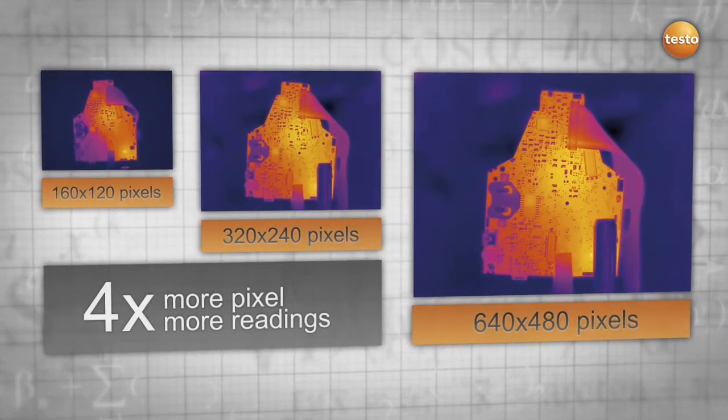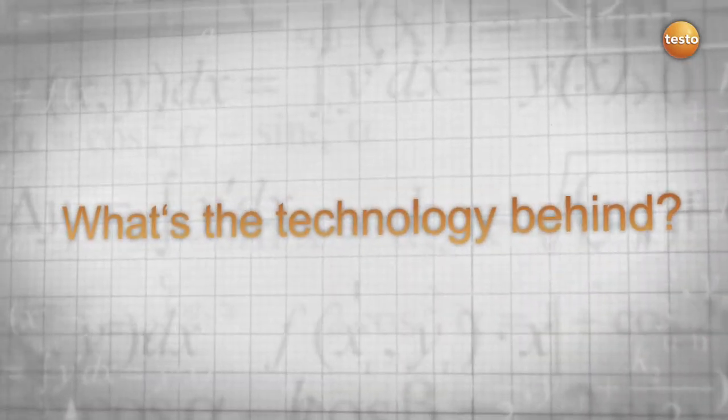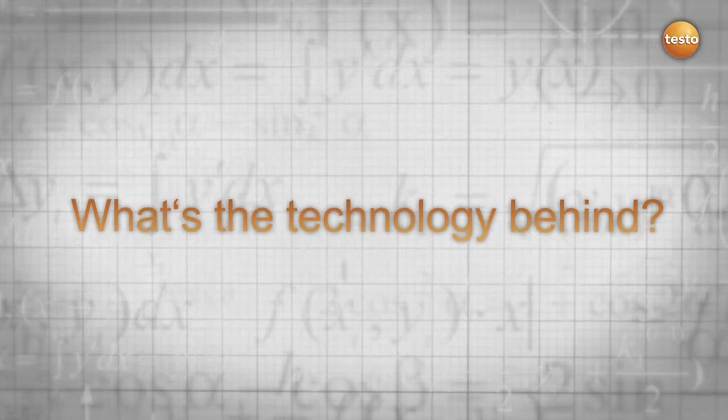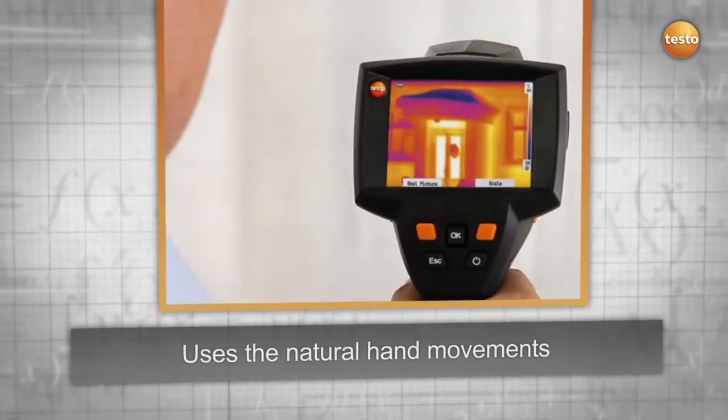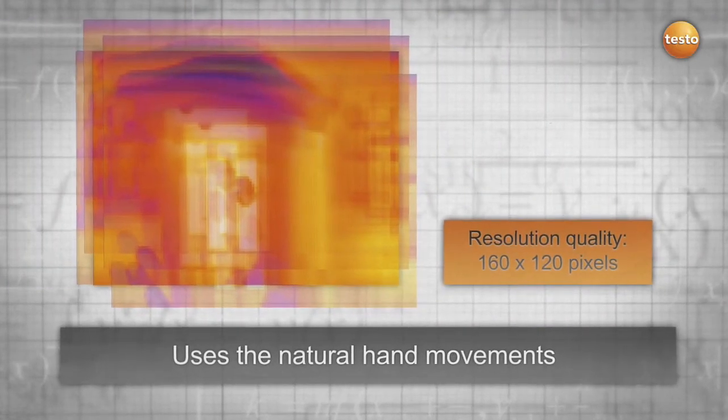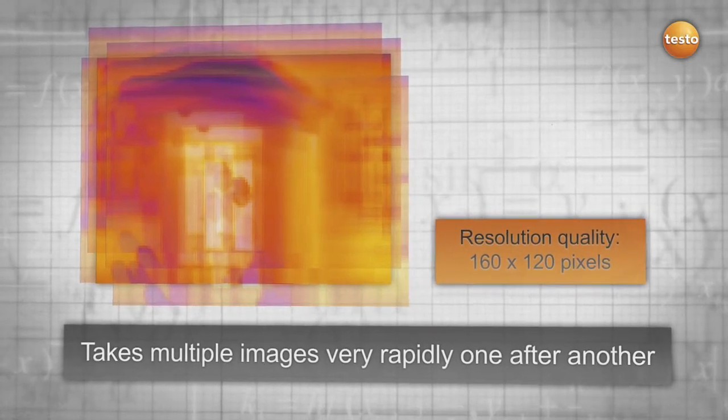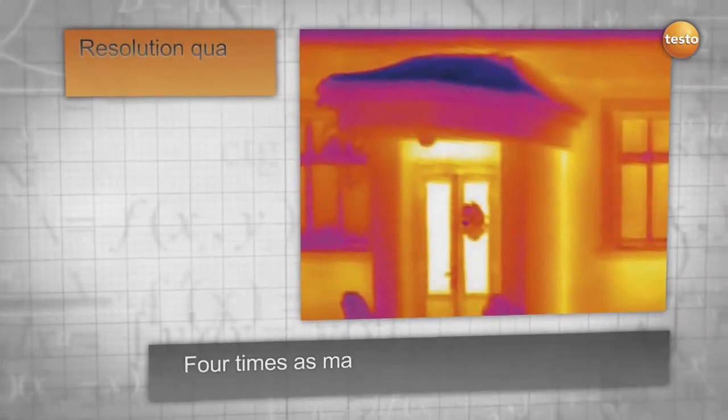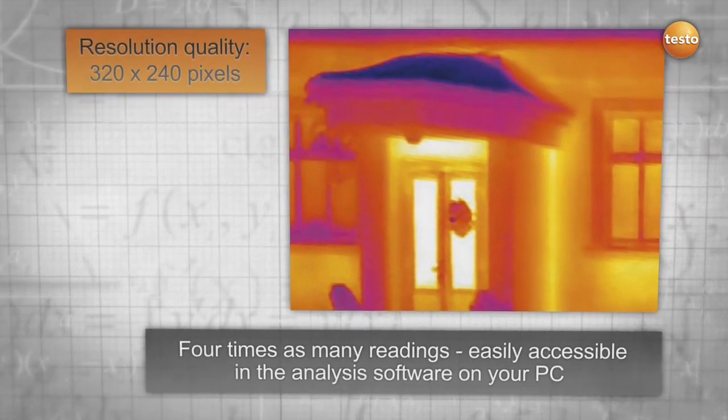With four times as many pixels and a more detailed picture, the Super Resolution technology uses natural hand movement and takes multiple images rapidly one after another, which are slightly shifted to each other. Using an algorithm, these images are then calculated to obtain one image. The result: four times as many readings and a much better thermal image resolution.